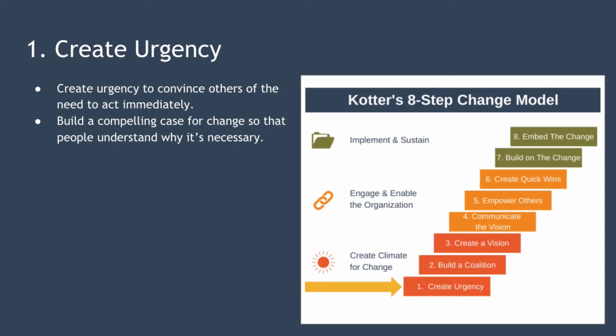First, you need to create a sense of urgency around the initiative that convinces others of the need to act immediately. What you're trying to do is build a compelling case for change so that people understand why the change is necessary. Your aim is to build lots of support for your initiative so that the sense of urgency is shared and your peers are no longer happy with the status quo. Kotter estimated that a minimum of 75% of management needs to back an initiative for it to be successful.